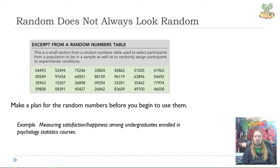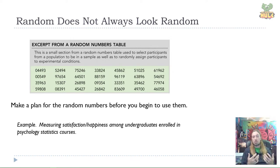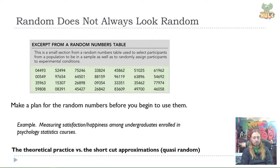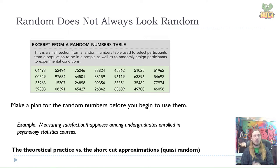However you use the random number table, think about how you're going to use it beforehand. If you start using it while coming up with the method, you have the possibility of inserting your own biases — wanting certain participants to be selected and unknowingly picking a way that biases the likelihood of their selection. This highlights the difference between the true ideal of randomness and what we'll call random assignment, versus the shortcut approximations we use in practice — what we might call quasi-random designs or quasi-random sampling.